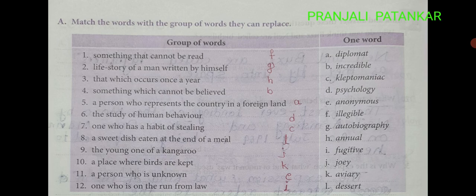8. A sweet dish eaten at the end of a meal — L. Dessert. 9. The young one of a kangaroo — J. Joey. 10. A place where birds are kept — K. Aviary. 11. A person who is unknown — E. Anonymous. 12. One who is on the run from the law — I. Fugitive.